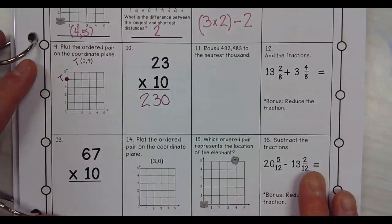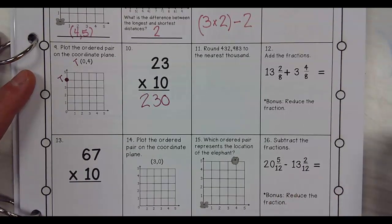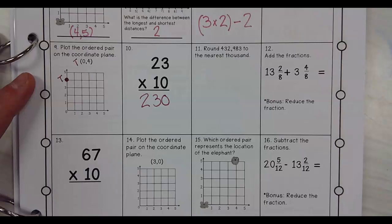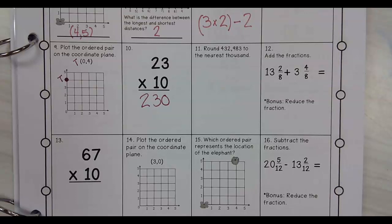We're going to round 432,983 to the nearest 1,000. Job number 1 is find the 1,000th place. Which one is in the 1,000th place? 2 is in the 1,000th place.